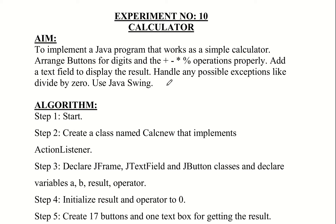Hello dear students. The next experiment is experiment number 10: calculator. That is, implement a Java program that works as a simple calculator. Use Java Swing. Arrange buttons for digits and plus, minus, star, percentage operations properly, and a text field to display the result, and handle any possible exceptions like divide by zero.